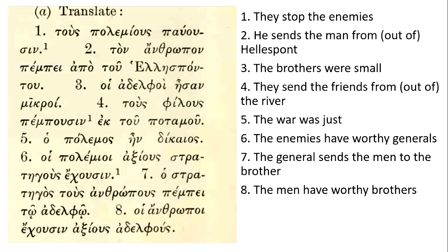The fourth sentence: they send the friends from out of the river. We know it's 'they' who are doing it because the 'pempousin' ending tells us it's third person plural. The '-us' ending tells us the friends are accusative plural. And we once again have a use of the genitive 'tu potamu,' which is not possessive but rather shows the place from out of which something is being sent — because it is nested within a prepositional phrase headed by the preposition 'ek.'